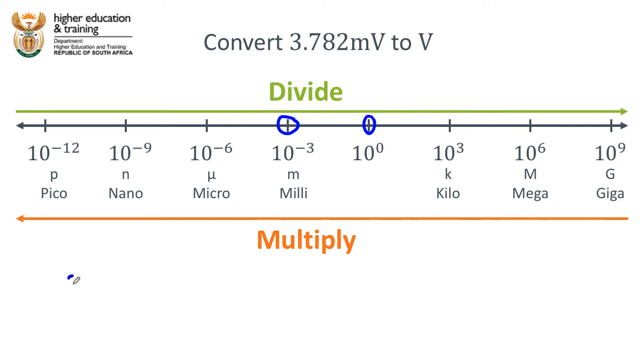So 3.782 millivolts, we need to divide that by 10 to the power—well, we can see the distance between negative three and zero is three. We need to make three jumps to get from one unit to the other unit. What is that going to equal?